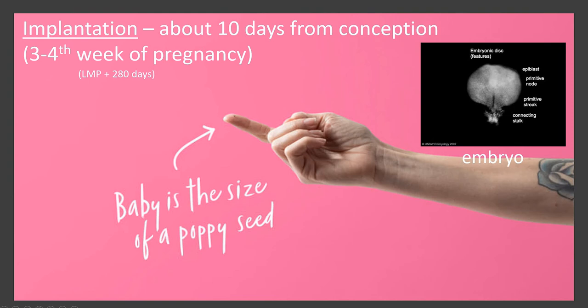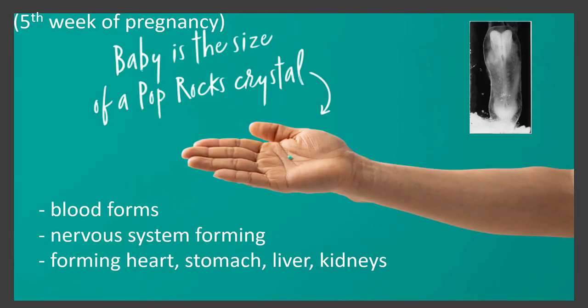We're going to go through the first trimester week by week. You're just going to get the highlights because there are way too many things that happen. After that, we're going to start going month by month because it's less detailed. You would be amazed how much the baby changes in one day at times during pregnancy. So that was the fourth week — on to the fifth week of pregnancy.